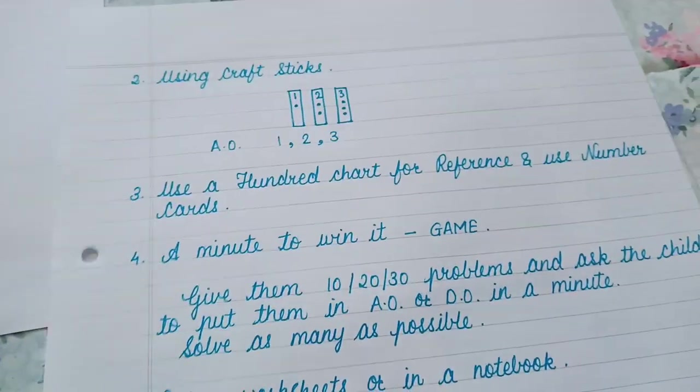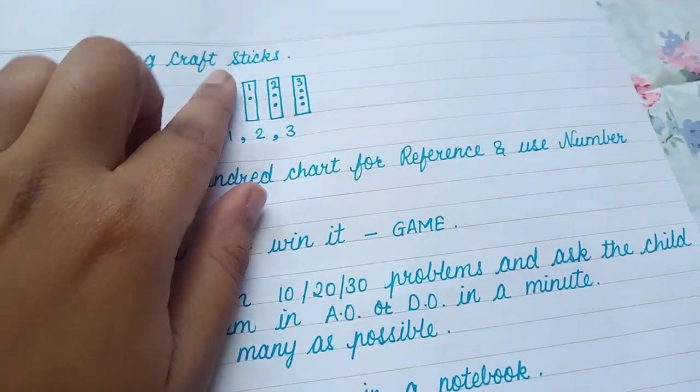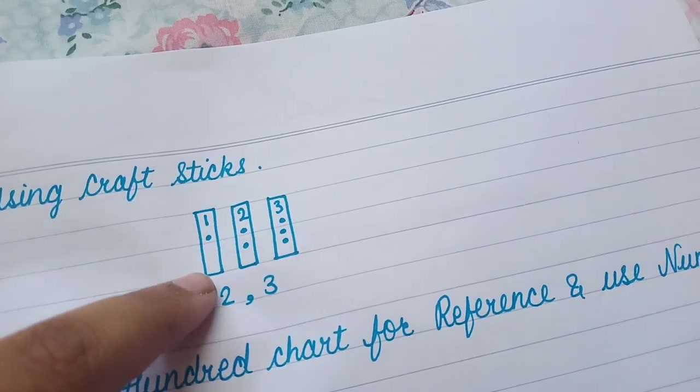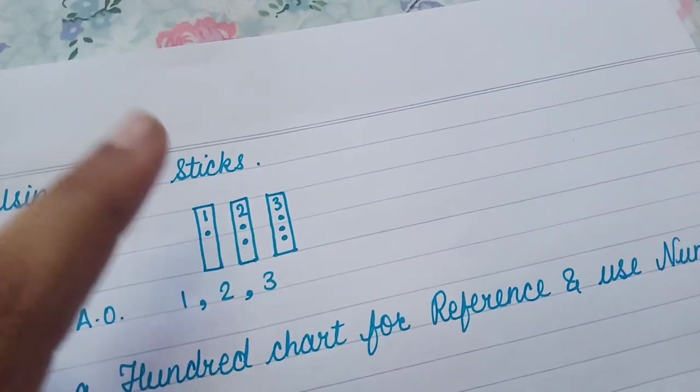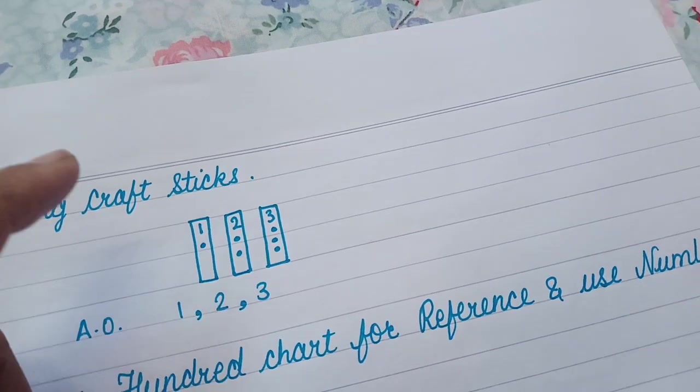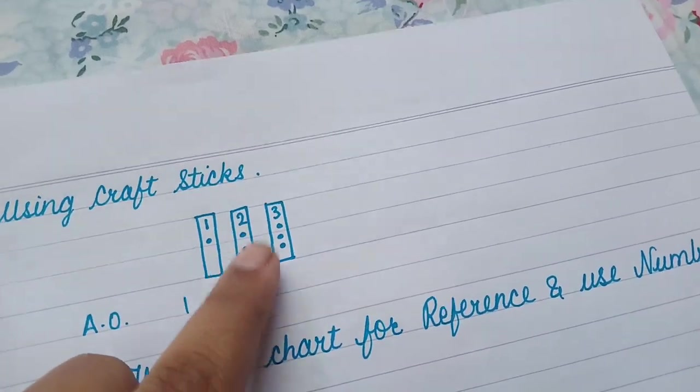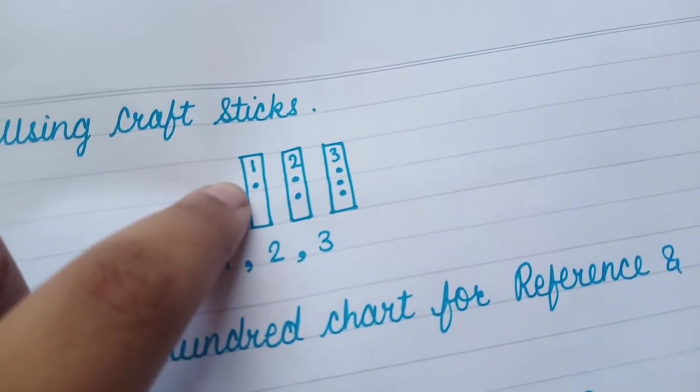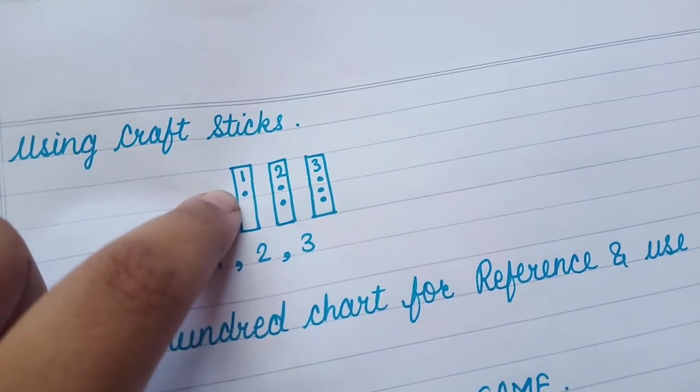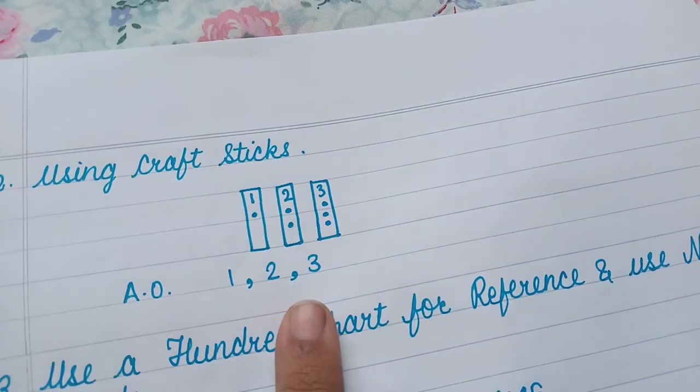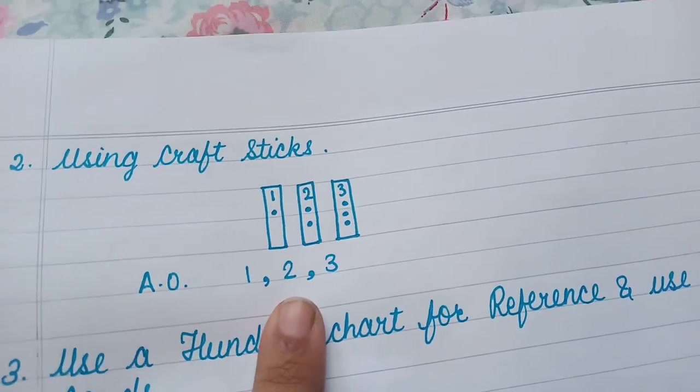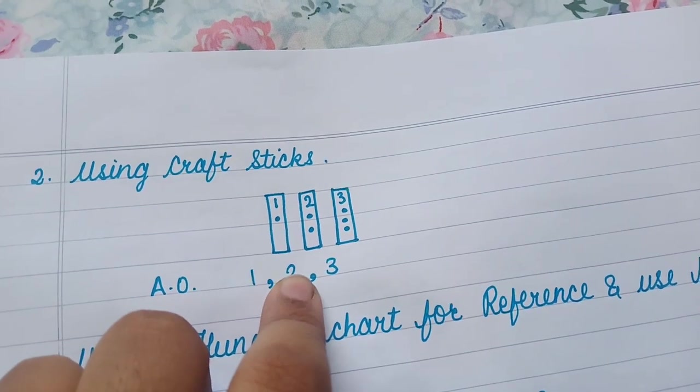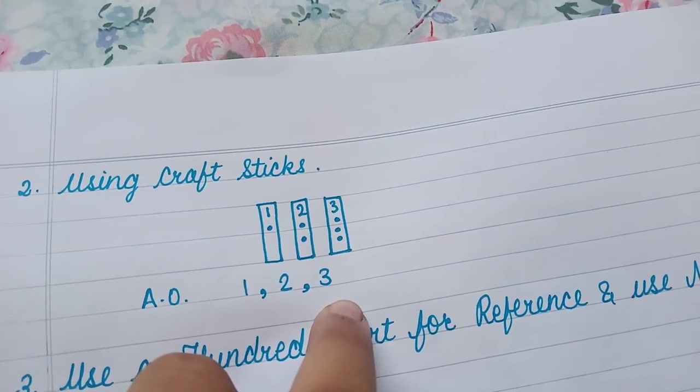Now what is the second activity? The second activity is using craft sticks. So I was in a hurry to film this video, so I couldn't make the activity. But I will share the activity in our Facebook group. So for now, consider these are the craft sticks and you have drawn the number as well as the quantity it represents. And now you have to arrange these three numbers in the ascending order. So the lesser quantity comes first, a little bigger quantity and the biggest quantity comes at last.